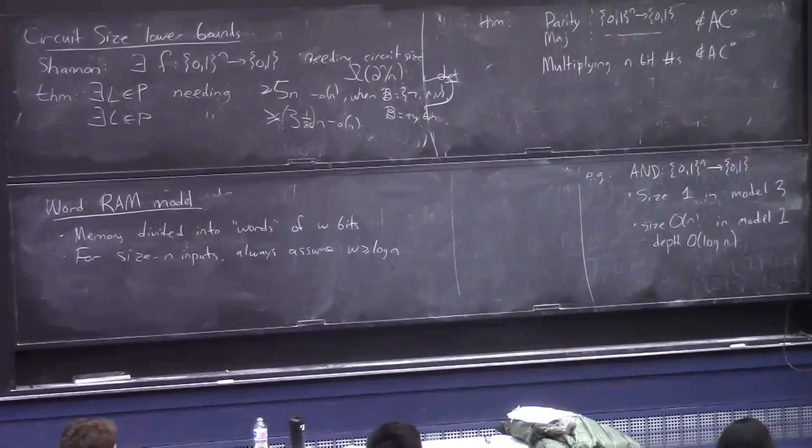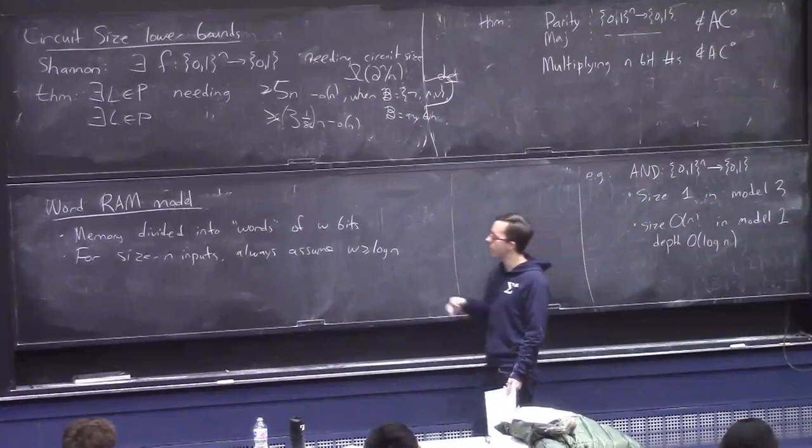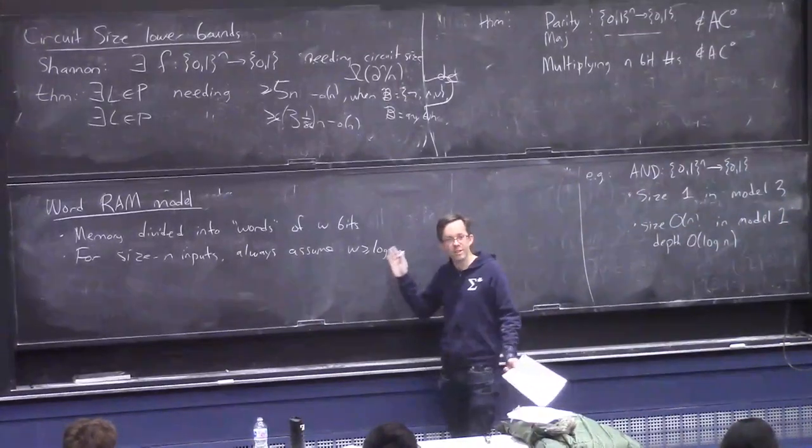So even though maybe it seems weird at first, like why don't you just accept it and get used to it. You can just take like every result about the word RAM model is starting out by saying like we assume that w is at least log n.